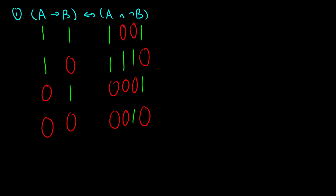Now we're going to do A arrow B. It's only going to be false when we have 1 arrow 0, which means the rest of the rows will be true. And finally, we have the biconditional. This takes information from column 2 and from the NOT column. It's true if the values are the same, and false if the values are different.